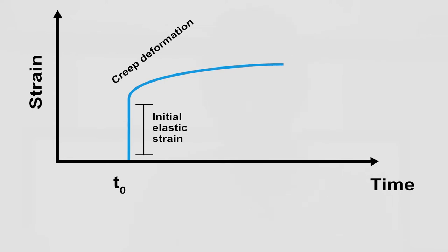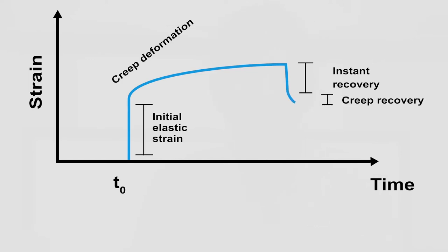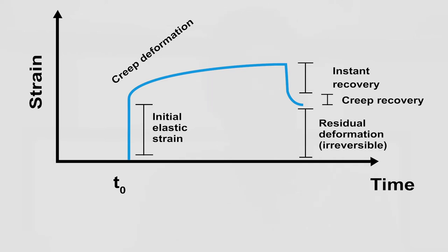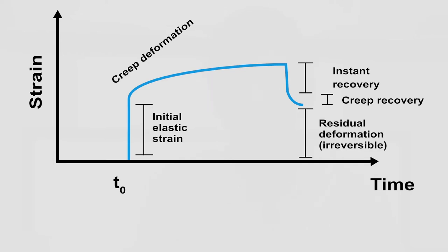When the load is removed again, the concrete will spring back to some extent and also some of the creep deformation will continue to return. This is what we call creep recovery. Part of the deformation is, however, irreversible.